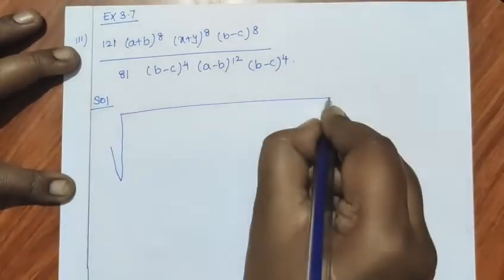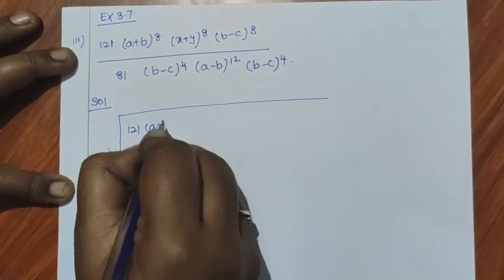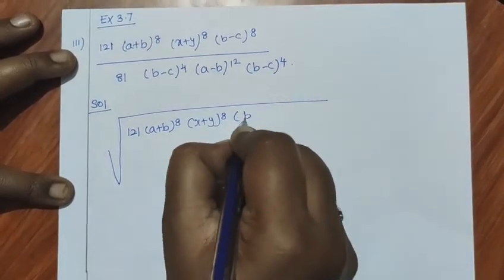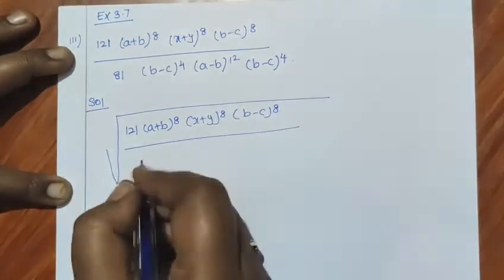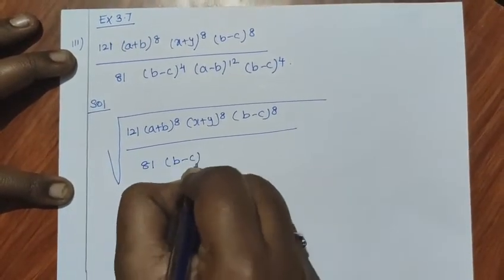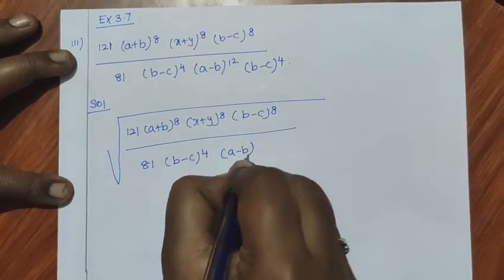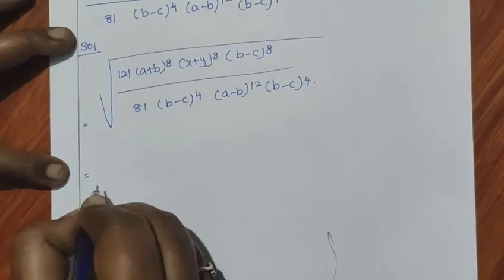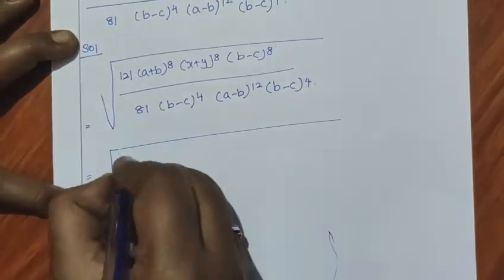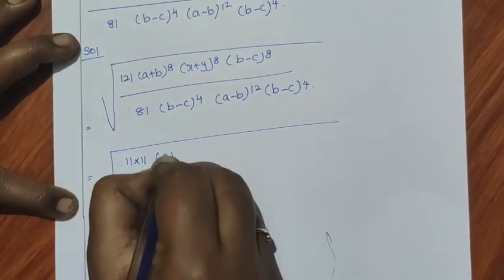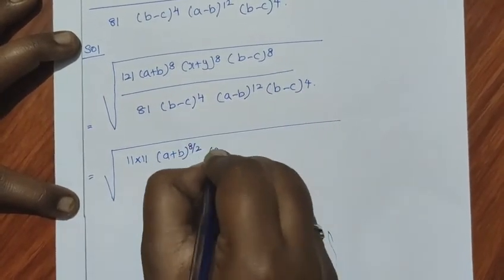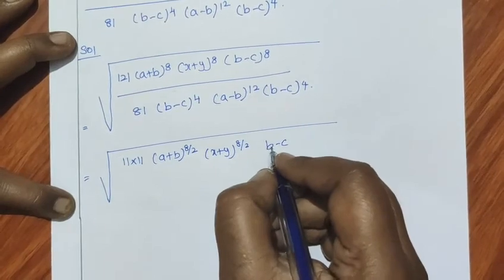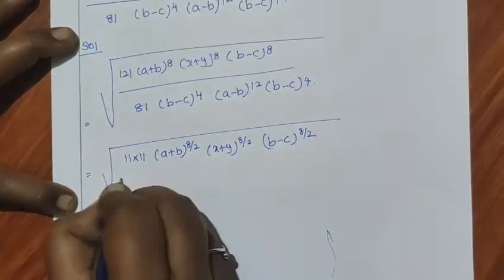Taking the square root: square root of 121 — 11 times 11 is 121. Then (a plus b) power 8 by 2, (x plus y) power 8 by 2, (b minus c) power 8 by 2. That gives 11 times (a plus b) power 4 times (x plus y) power 4 times (b minus c) power 4.